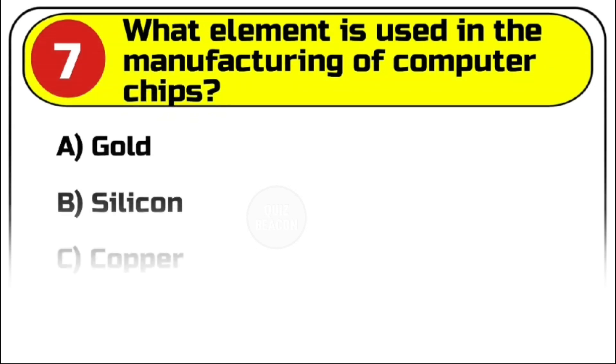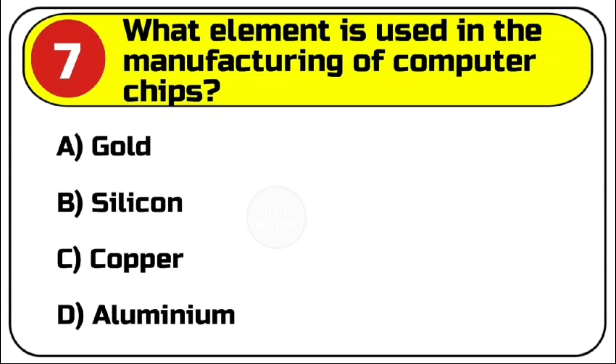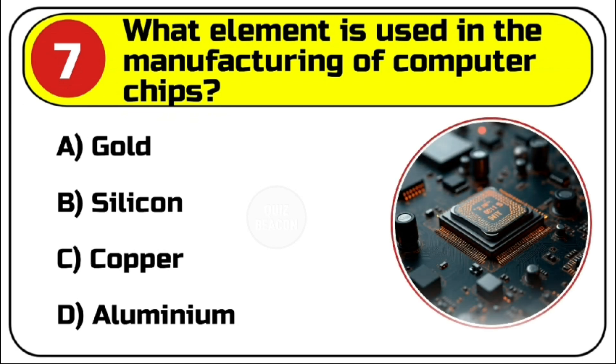Question number 7. What element is used in the manufacturing of computer chips? Options are A. Gold. B. Silicon. C. Copper. D. Aluminium.